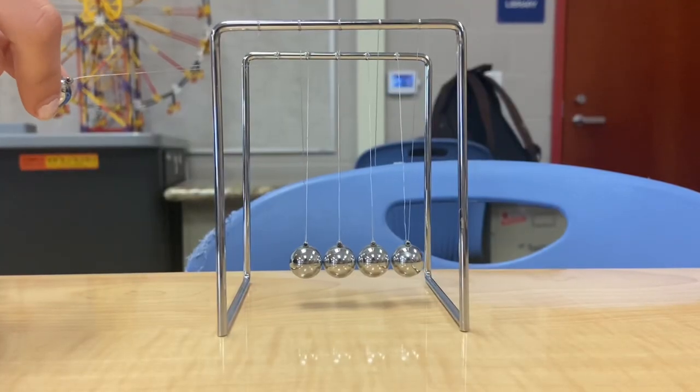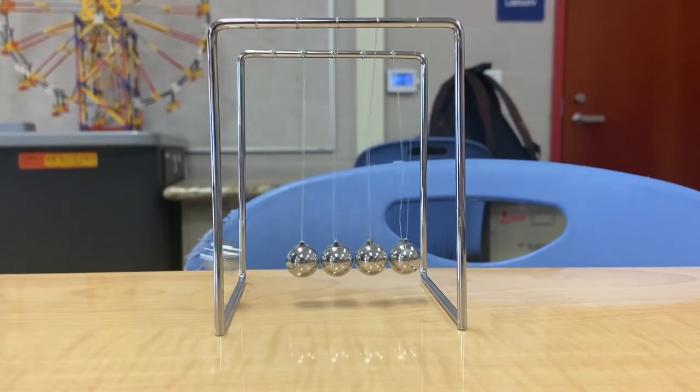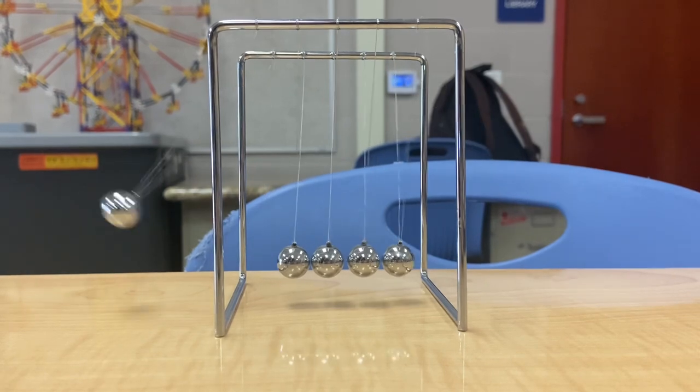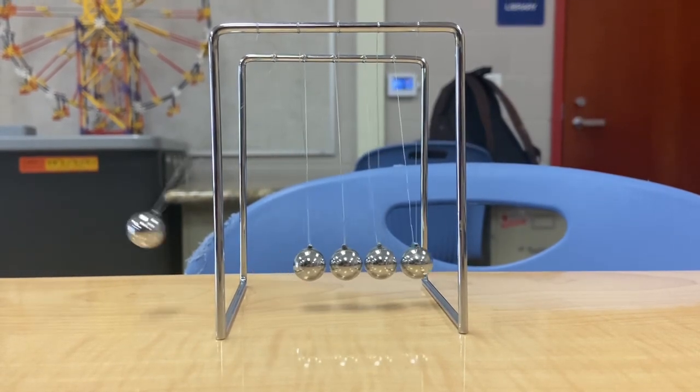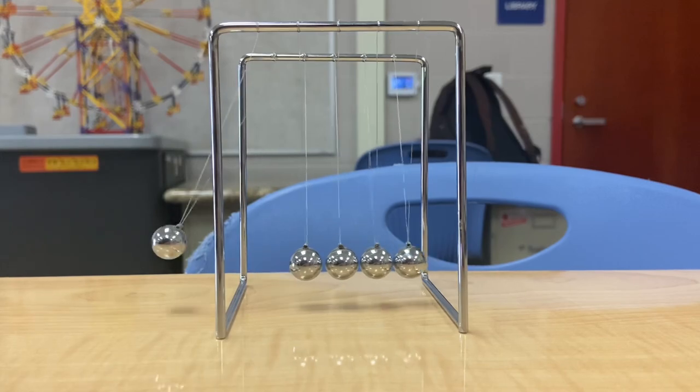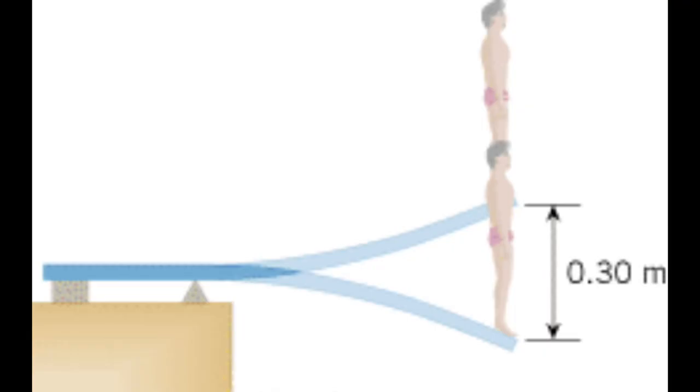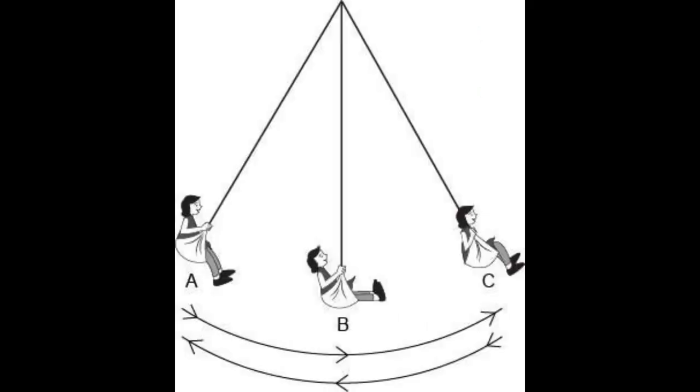Simple harmonic motion is best described by showing a visual representation, which we can find through real world examples. This first example is a Newton's cradle, and that back-and-forth motion is a good example of how simple harmonic motion looks in real life. Some other real life examples include a person bouncing on the end of a diving board, a child in a swing, or a car with no shocks that bounces down the road like a low rider every time you hit a bump.